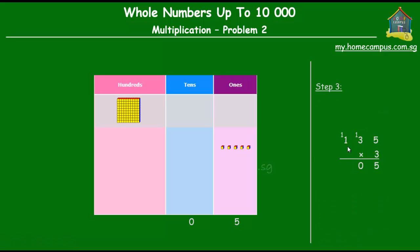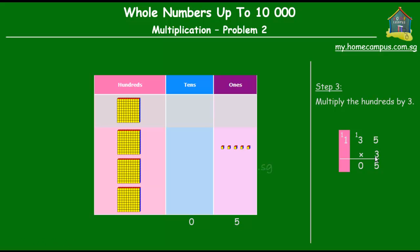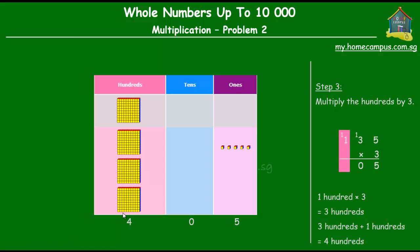Next, we multiply the hundreds by 3. In our number 135, there is only 1 hundred. So we put the 100 in the hundreds column and multiply by 3. 1 times 3 is 3, so 100 times 3 is 3 hundreds. We have 3 hundreds from the multiplication and 1 hundred from regrouping in the previous step, so altogether we have 4 hundreds. So the product of 135 and 3 is 405.